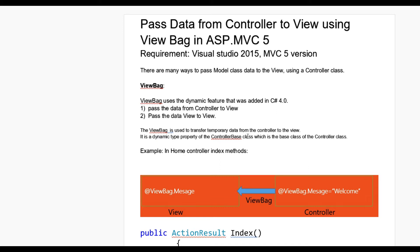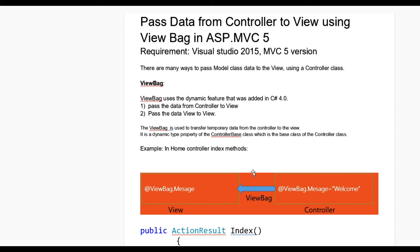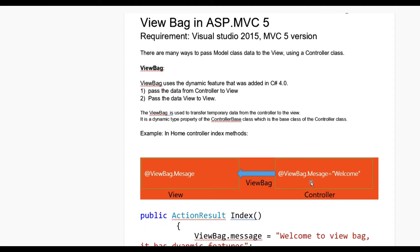ViewBag is a dynamic type property of the controller base class, which is the base class of the controller class. In this example you can see in the controller I have written ViewBag.Message. In place of message we can put any value, like set it equal to 'Welcome'. And in the view we simply write ViewBag.Message, so that value is shown in the view.